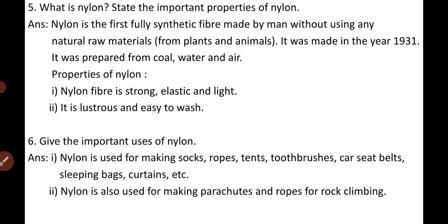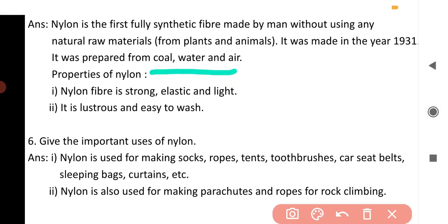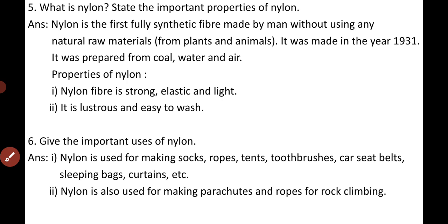Question four: What is nylon? State the important properties of nylon. Nylon is the first fully synthetic fiber made by man without using any natural raw materials — neither from plants nor from animals. It was made in the year 1932 and prepared from coal, water, and air. Properties: nylon fiber is strong, elastic, light, lustrous, and easy to wash. Uses: nylon is used for making socks, ropes, toothbrushes, car seat belts, sleeping bags, curtains, parachutes, and ropes for rock climbing.